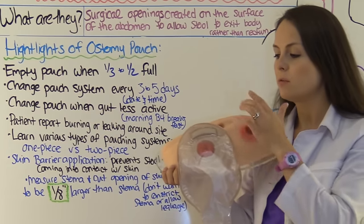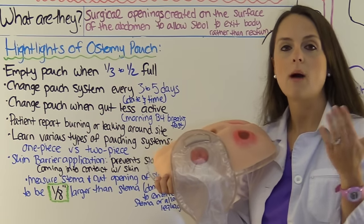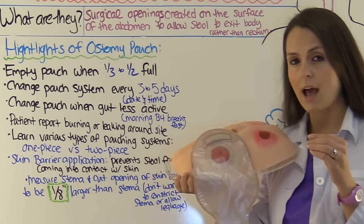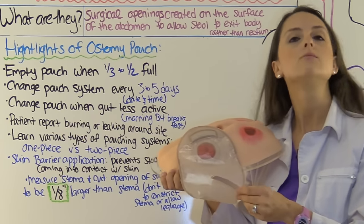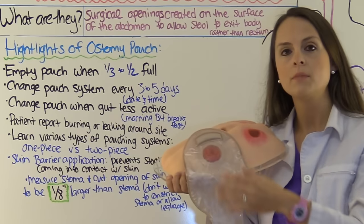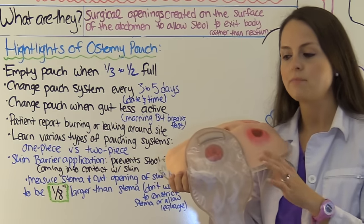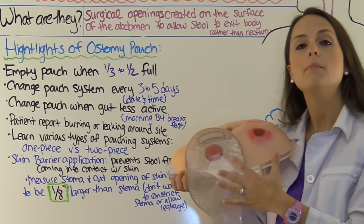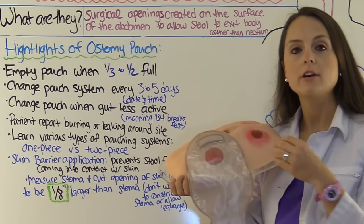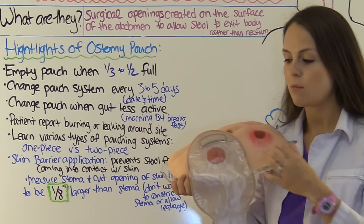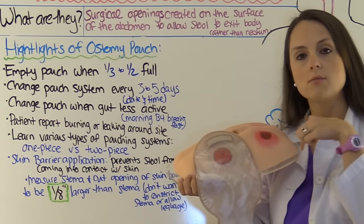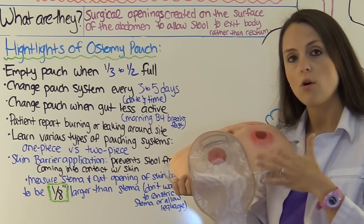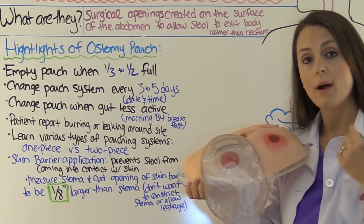Empty the bag whenever it becomes about one-third to halfway full of stool. Every system is different, so get familiar with what the patient has. Some bags use a clamp — you undo the clamp and empty it into the commode. Some are velcroed, and some require a whole new pouch that snaps on. The whole pouching system should be changed about every three to five days. Around the system is a skin barrier that protects the skin from drainage leaking onto it.